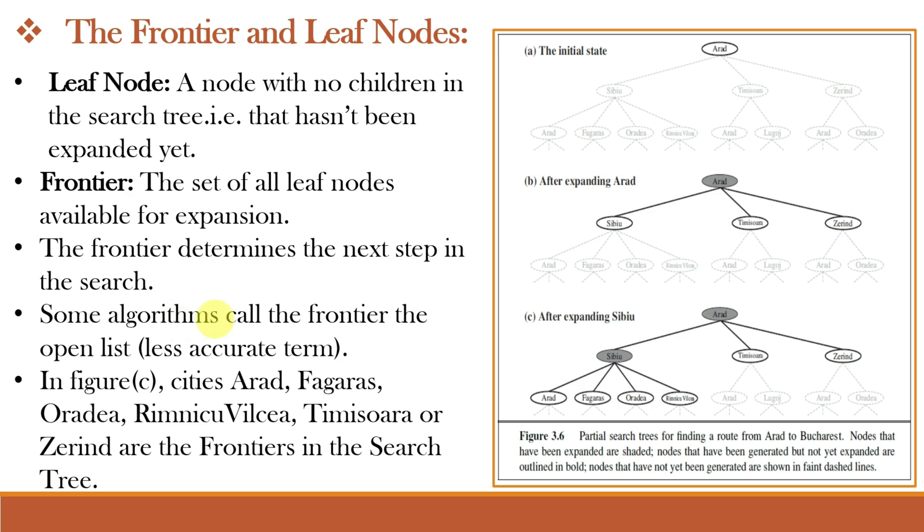Some algorithms call the frontier the open list which is a less accurate term. What is frontier in this figure? In figure C, the cities like Arad, Phagoras, Oredia, Rimnicu-Vilsia, Timisora or Zerin are different frontiers. Why? Because these all are available for expansion next, or these all can be expanded next.